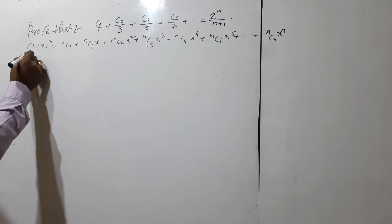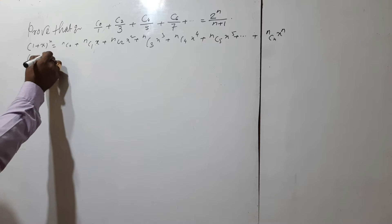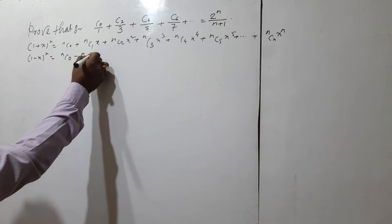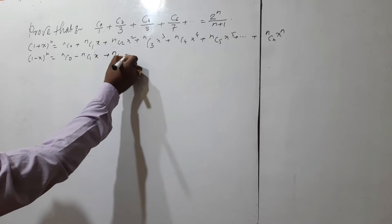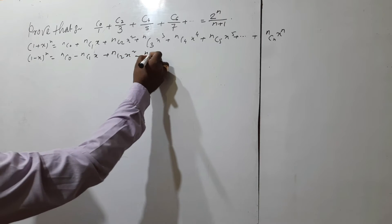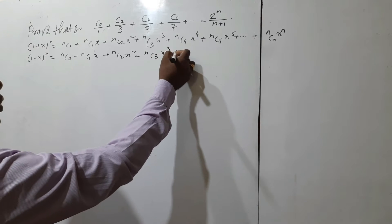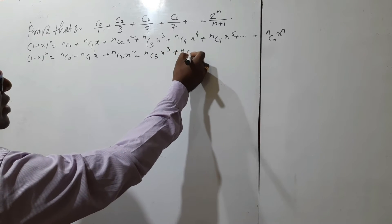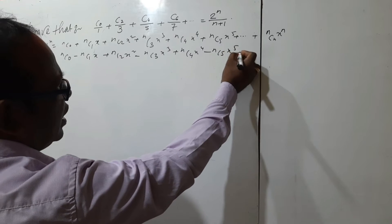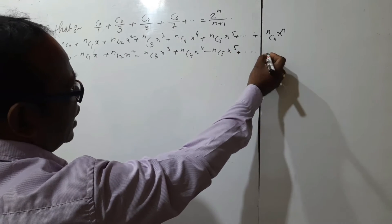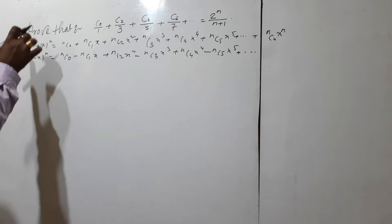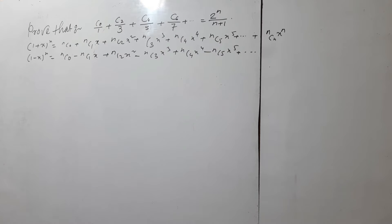Similarly, (1-x)^n equals nC0 minus nC1·x plus nC2·x² minus nC3·x³ plus nC4·x⁴ minus nC5·x⁵, and so on up to the ending term.